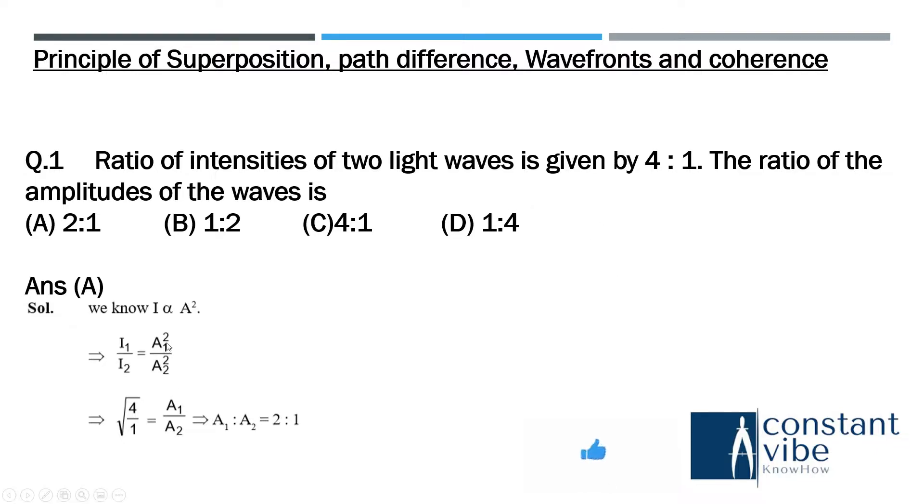Here you can see the solution method. We know I is directly proportional to A square, so here I1 by I2 equals A1 square by A2 square. That we will get 2 is to 1.